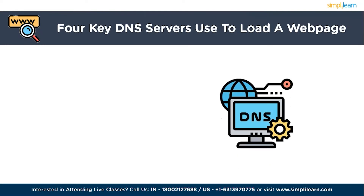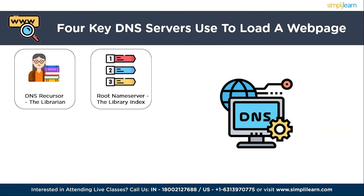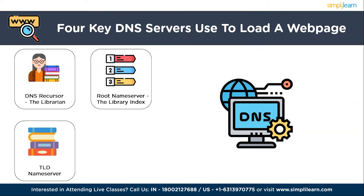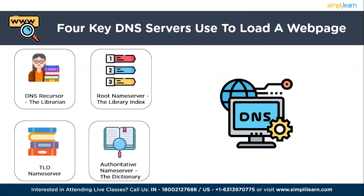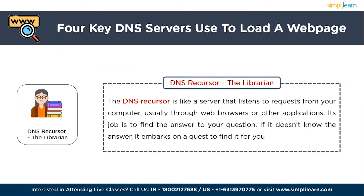In the process of loading a web page, there are four key DNS servers that play different roles: the DNS recursor (the librarian), the root name server (the library index), the TLD name server (a specific rack of books), and the authoritative name server (the dictionary). The DNS recursor is like a helpful librarian — when you want to find a specific book in a large library, you ask the librarian for assistance. Similarly, the DNS recursor listens to requests from your computer through web browsers or other applications and embarks on a quest to find the answer if it doesn't already know it.